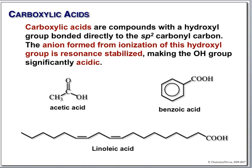Acetic acid is a two-carbon carboxylic acid. Carboxylic acids have a carbonyl, alkyl or aryl on one side, and OH on the other. They are acidic because they form a stable anion. Benzoic acid has the carboxylic acid attached to the ring. This is linoleic acid — it's a naturally occurring fatty acid.